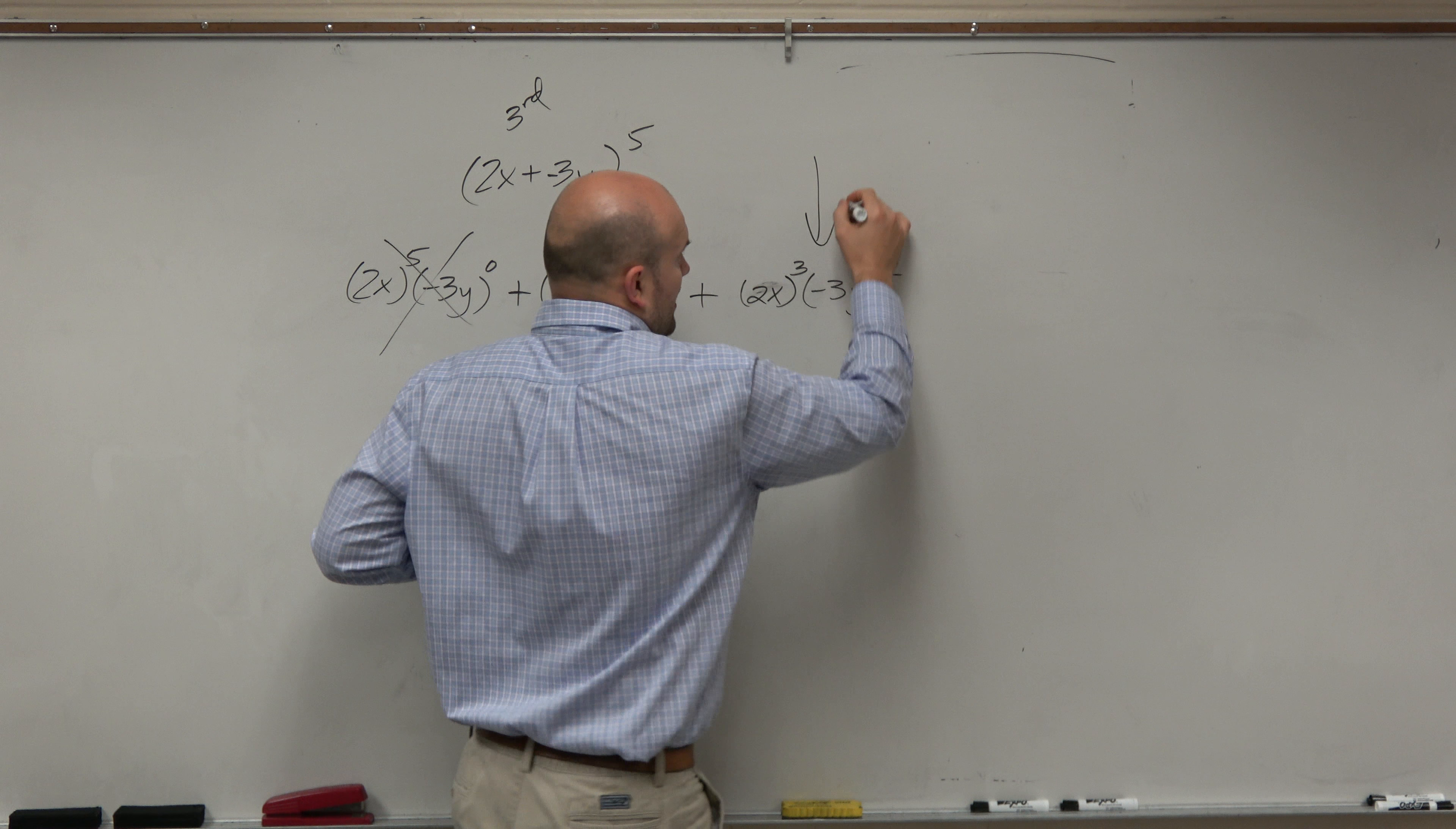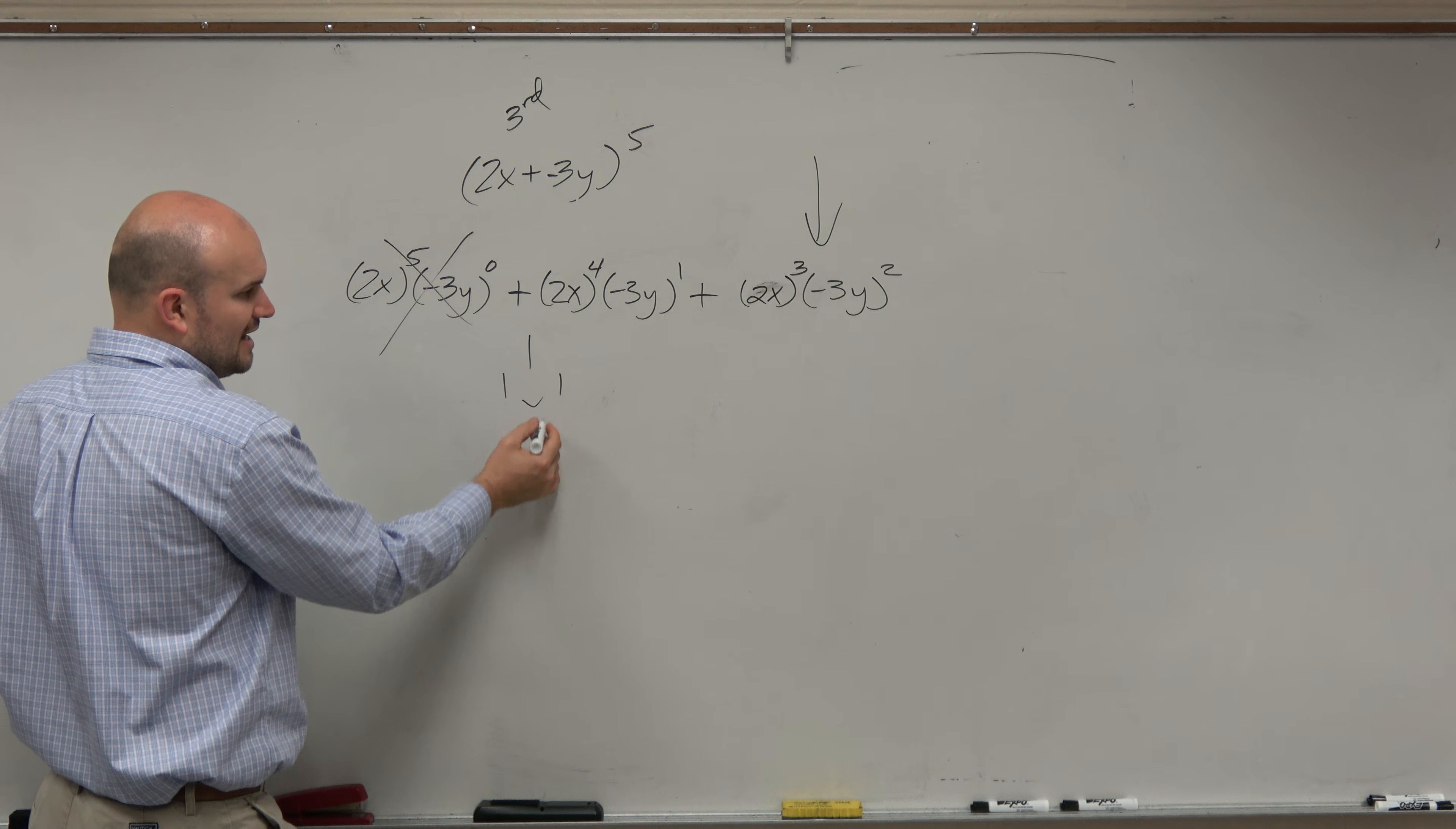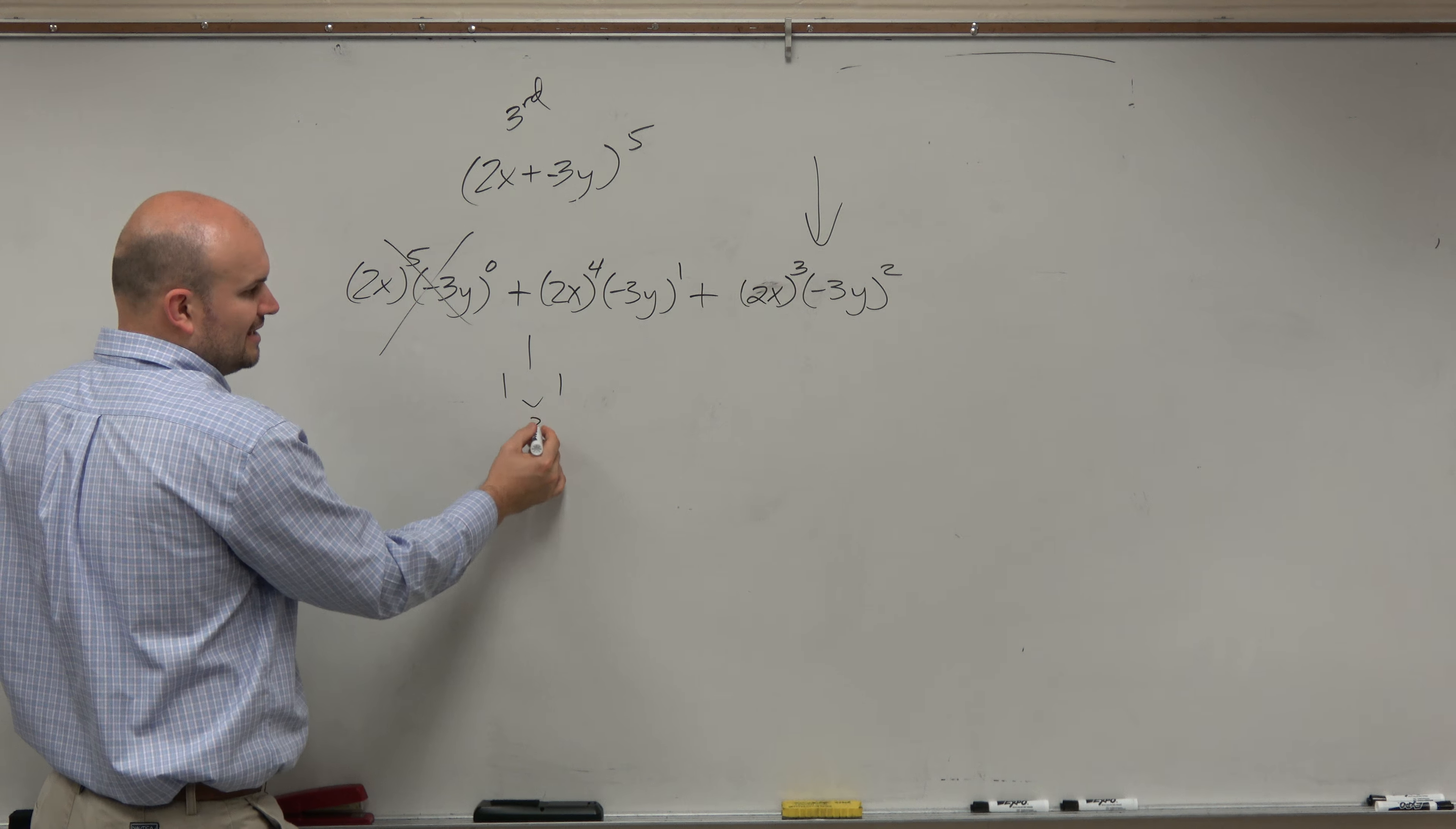However, there's one last thing that this method does not tell us: the coefficients. To understand the coefficients, we look at Pascal's triangle. So we're just going to go ahead and create a nice little setup for Pascal's triangle. We're always going to start each row with 1, and then we're just going to add the two terms in the row to get to the next row.